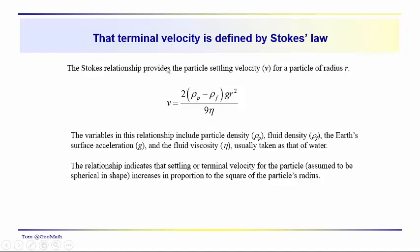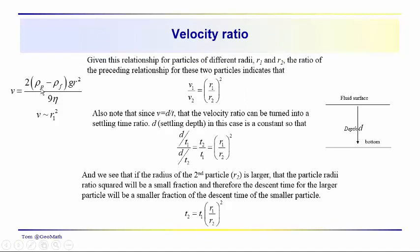The settling velocity is defined by the relationship referred to as Stokes' law. Stokes' law gives us a relationship between settling velocity and the particle radius. Specifically, the terminal settling velocity varies directly with the square of the particle radius. We also have the density of the particle minus the density of the fluid, the acceleration due to gravity, and eta which is the viscosity. This relationship assumes that the particles are spherical in shape.